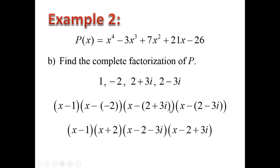Simplifying the signs a little further: negative times negative is positive, negative times positive is negative, and negative times negative is positive. And here it is — the complete factorization of P of x for the 4th degree pentanomial.